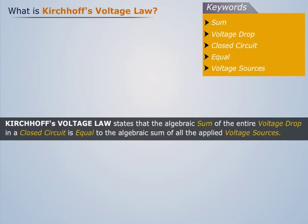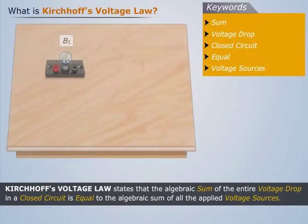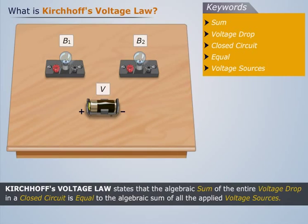To understand this law, let us consider two bulbs and a battery of voltage V connected together by wires, thus forming a closed circuit.